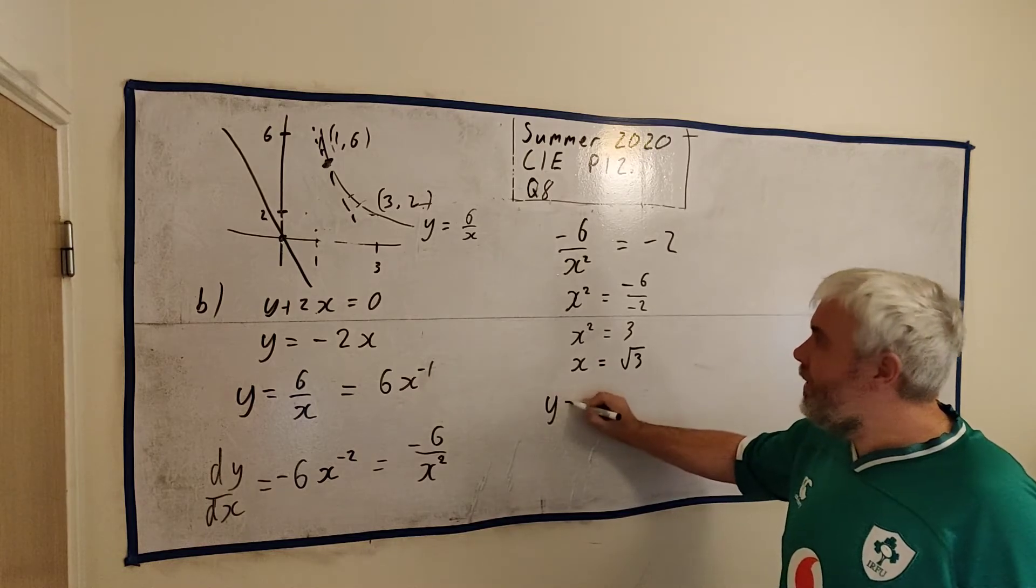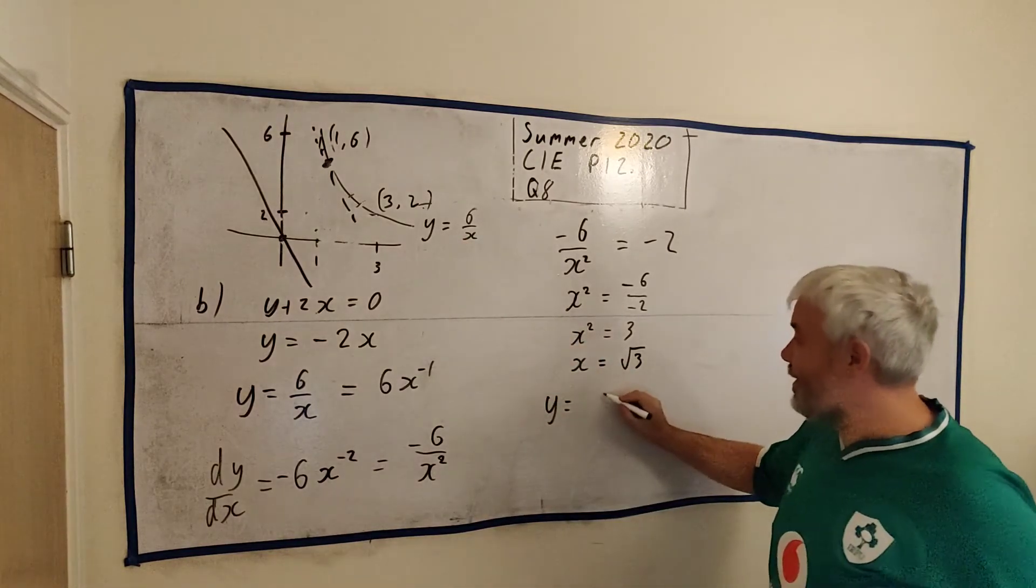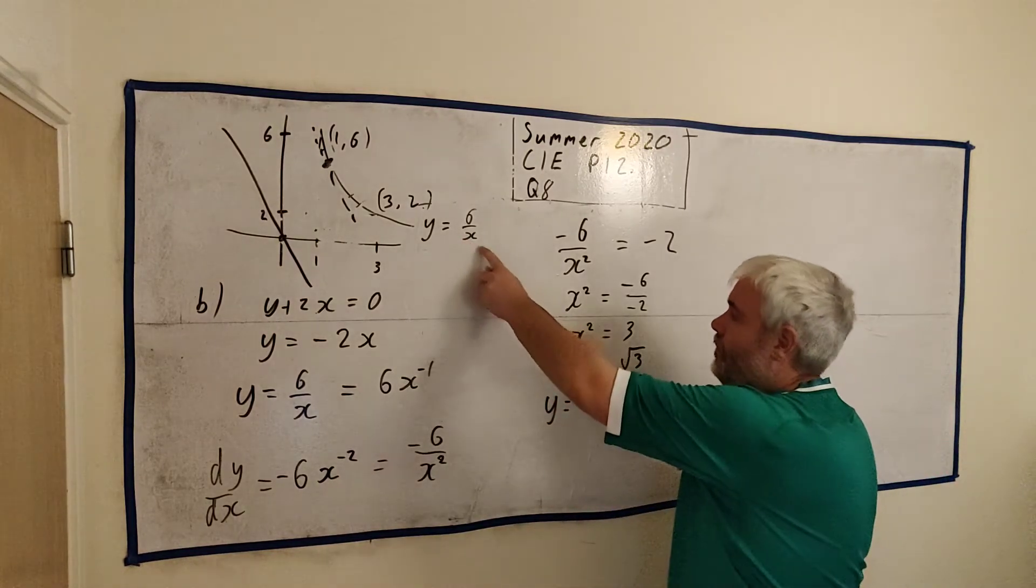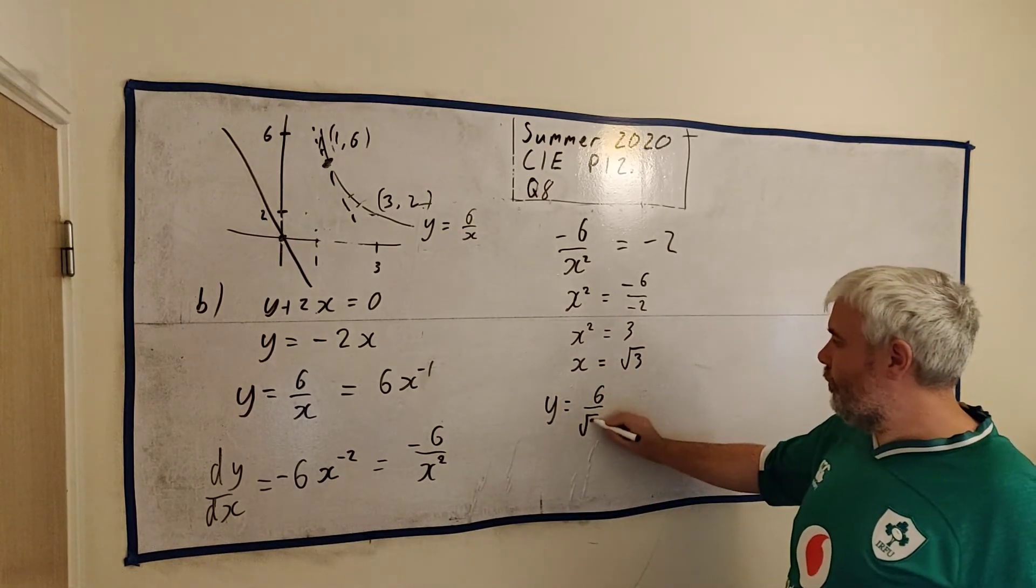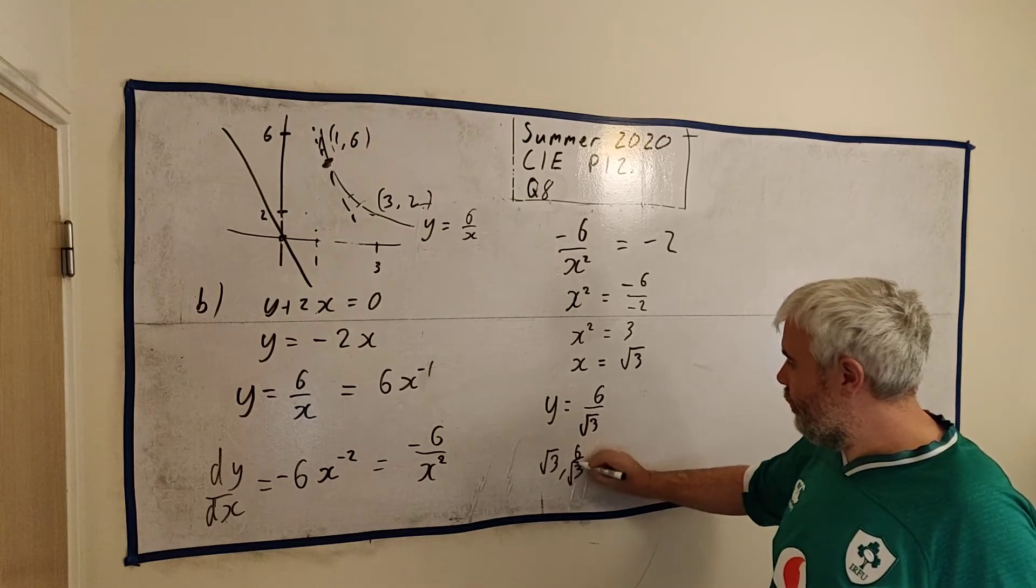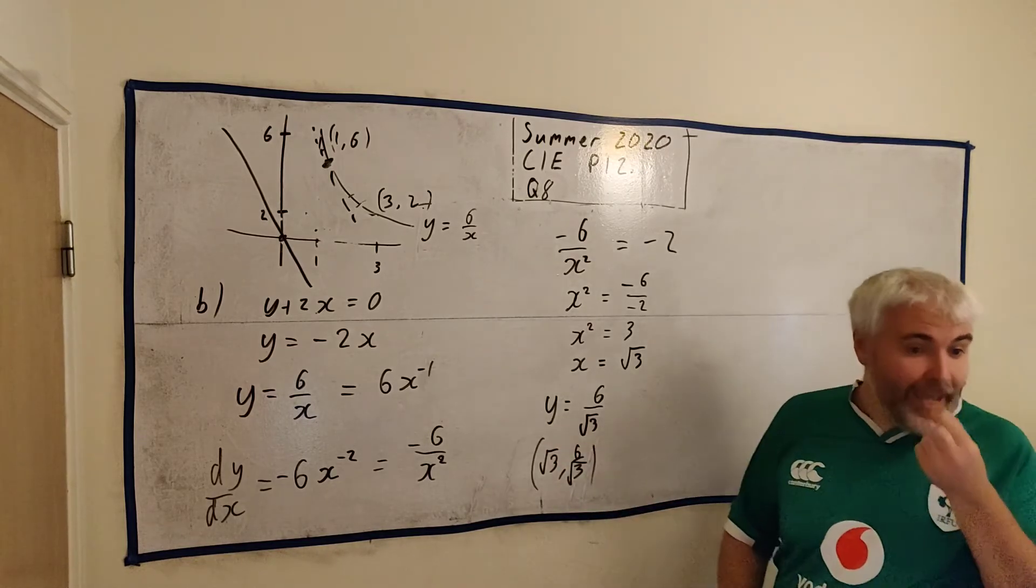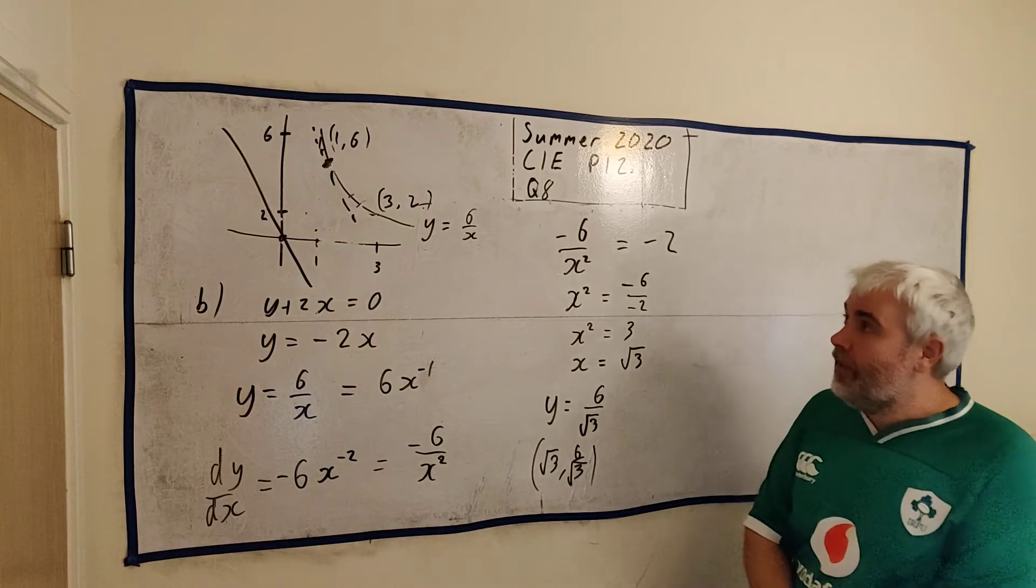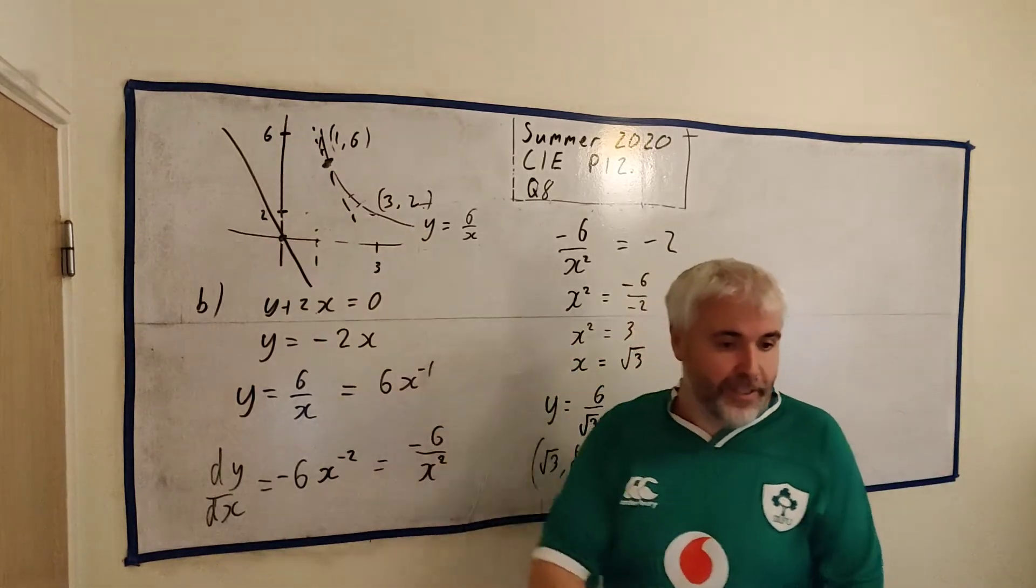Now, what's y? y is equal, it's right here, y is equal to six divided by x. Well, x is square root of three. So this point is square root of three, six over the square root of three. That's this point that has a slope that's equal to this line.